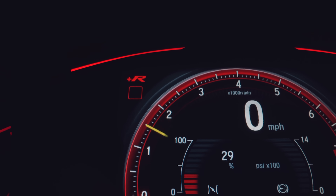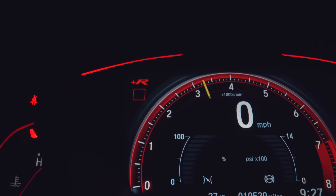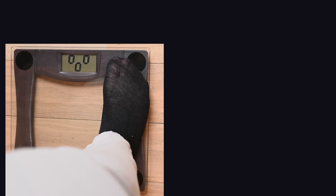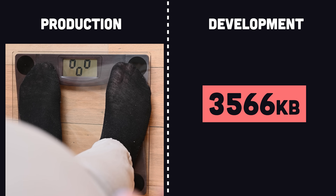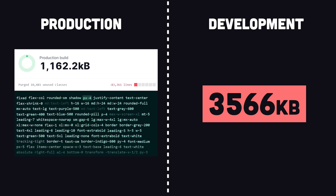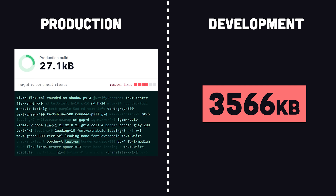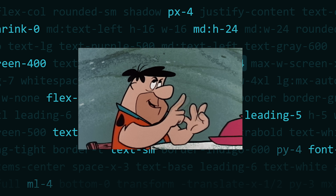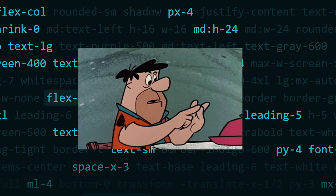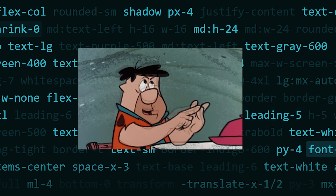Another concern you may have is performance, because Tailwind weighs in at over 3500 kilobytes. But when you go to build for production, it will automatically purge any unused utility from the final bundle, resulting in minimal dead code and thus faster page loads. But who has time to learn and memorize all these different utility classes?